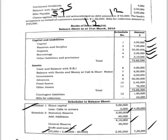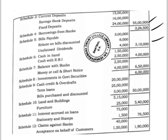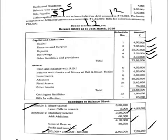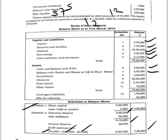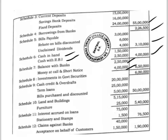Now for the asset-side notes. Note number 6, cash and balances with RBI: cash in hand 1,50,000 plus cash with RBI 2,50,000 equals 4 lakh, shown in the balance sheet. Note number 7, balances with banks and money at call and short notice: balance with banks 2,50,000 plus money at call and short notice 4 lakh equals 6,50,000. Note number 8, investments: investment in government securities 6 lakh.